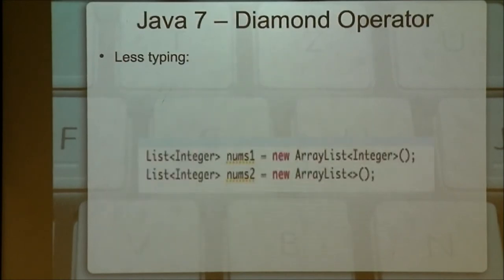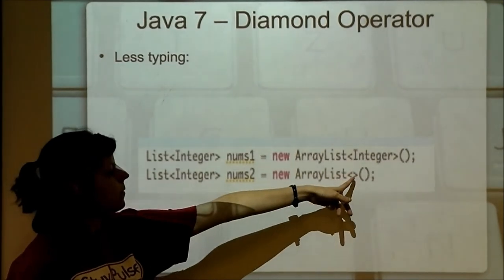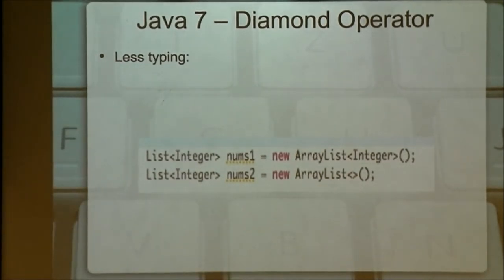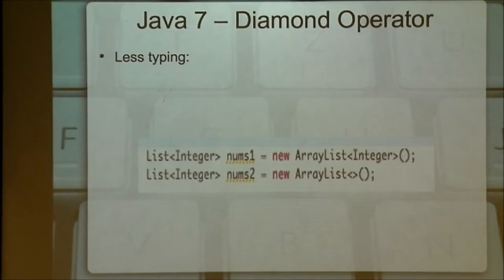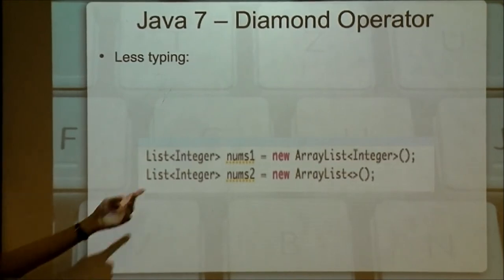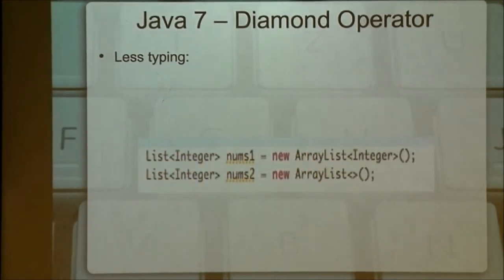On to Java 7 — remember we're skipping Java 6. Java 7 has a new concept called the diamond operator, because it looks like a diamond. They realized after they introduced generics in Java 5 that it's redundant to write the same type on both sides when creating a collection. So they said, forget it — you don't have to write it; it can be implied.